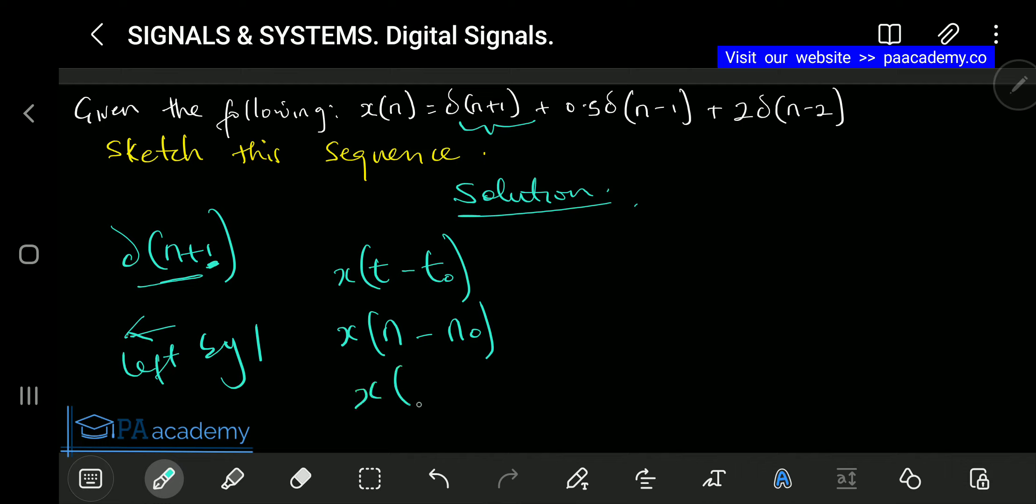Instead of t, they use n here. What they had actually was x(n - (-1)). I'm making reference to shifting operation. I've explained this under the video on shifting operation. I just want to go through it briefly to refresh ourselves so that we don't get confused. Once you simplify this, you are going to be having x(n+1).